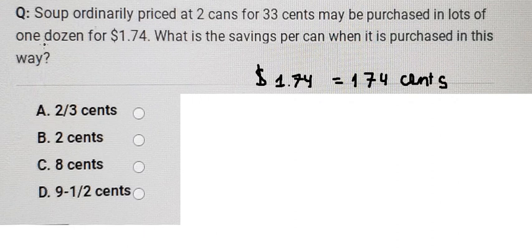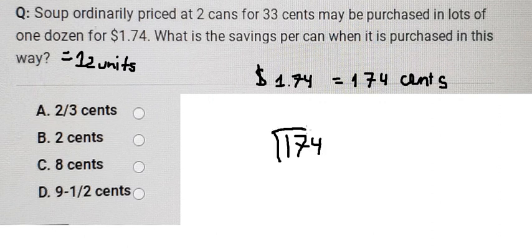We know that one dozen is about 12 units. So we need to find the price for one unit, so we use 174 and divide by 12.